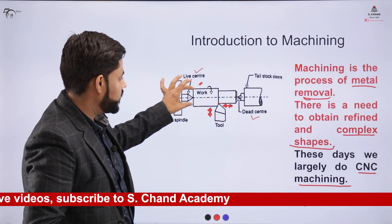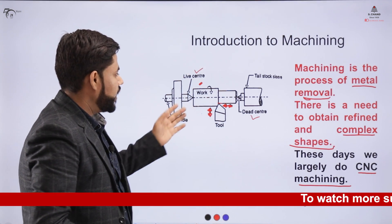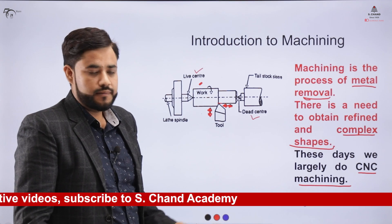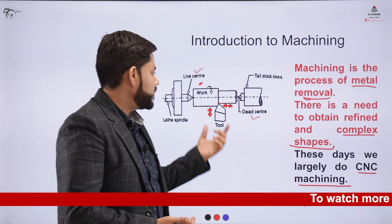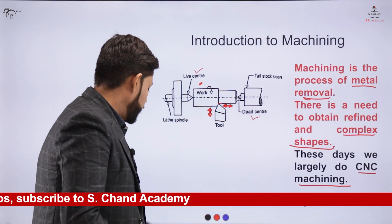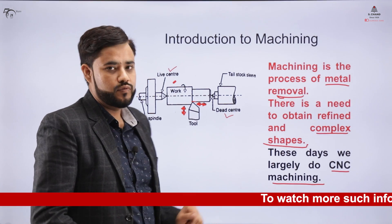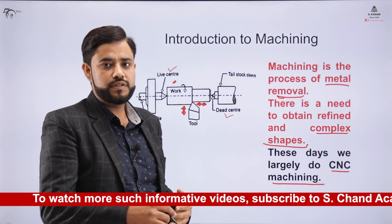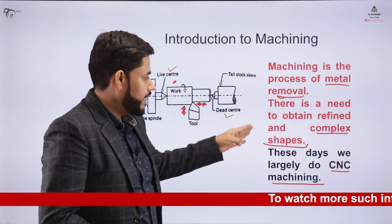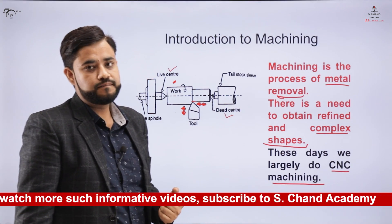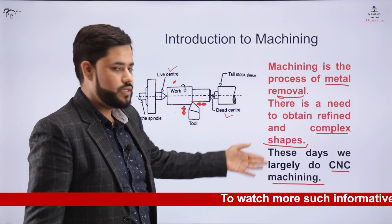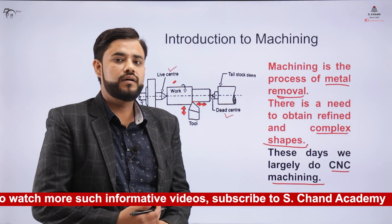For example, if I have a workpiece of 20 mm diameter and want to convert it to 15 mm, I need to use the machining process. It is applicable for cylindrical jobs as well as square or cuboidal structures. Machining is basically a process of metal removal — chips are released during this process. For refined or complex shapes, CNC machining is used, which will be explained further in this presentation.